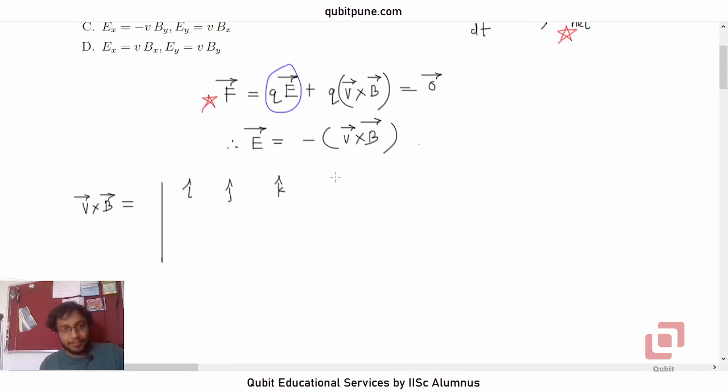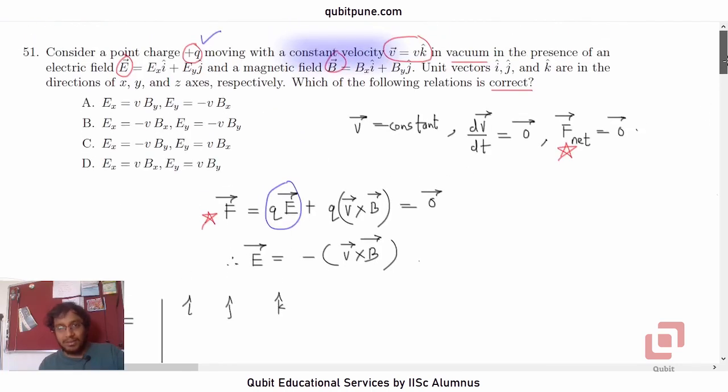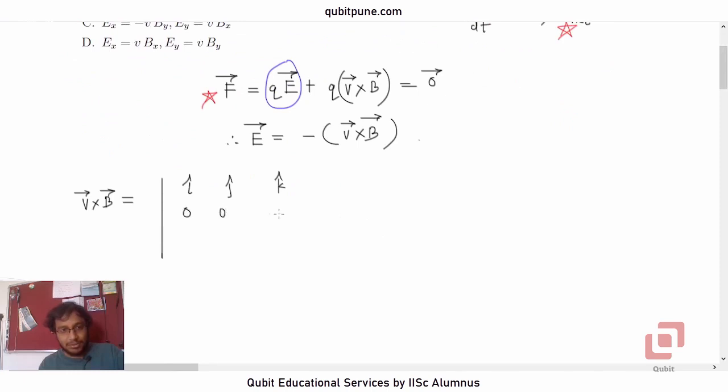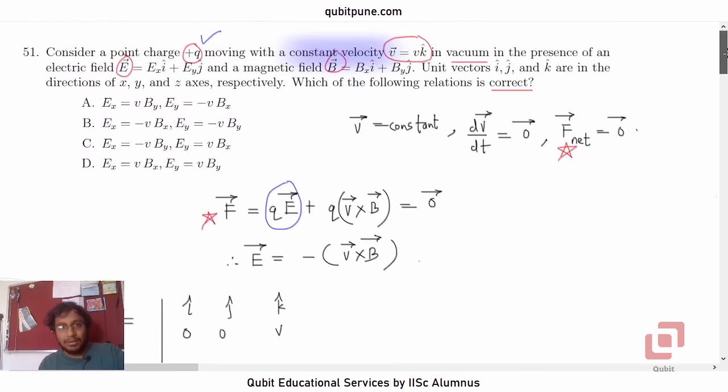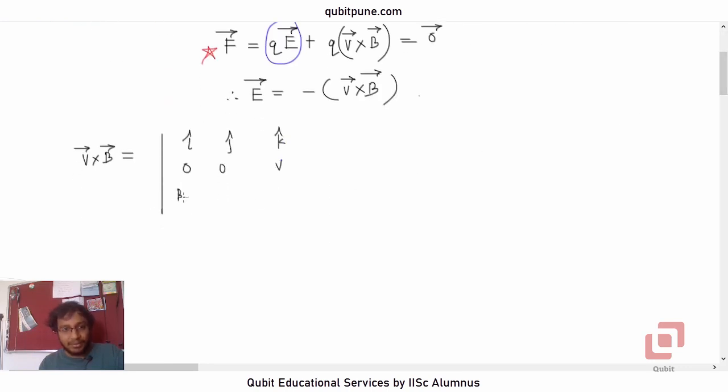Setting up the determinant: î, ĵ, k̂ in the first row. v̄ = vk̂, so the second row is 0, 0, v. The magnetic field B̄ = BxÎ + ByĴ is parallel to the xy-plane, so it has no k component. The third row is Bx, By, 0.